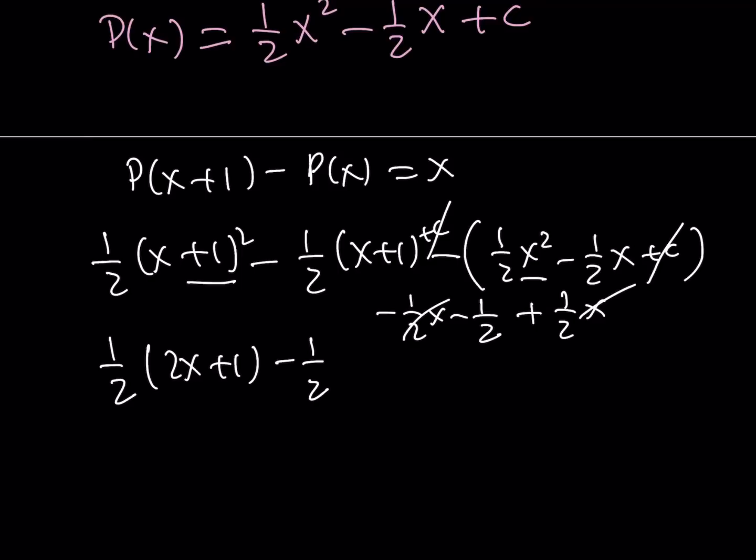Okay, so now at this point, we can just go ahead and distribute everything. If we do, we're going to get the C's canceled out. So that's going to be X plus 1 half minus 1 half, leaving us with X. So our solution is actually correct.